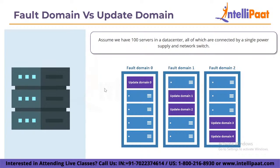In summary, an update domain is a collection of servers that may be updated and rebooted simultaneously. A data center availability set is a notion made up of many fault domains and update domains. When you establish an availability set, you may specify how many fault domains and update domains it should contain. An availability zone is made up of update domains and fault domains, and these concepts also apply within availability zones.